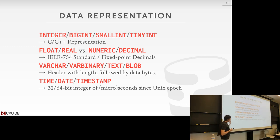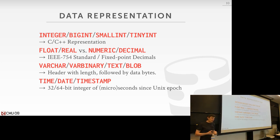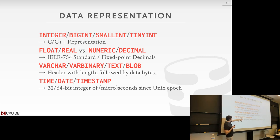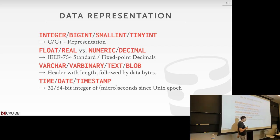For dates and timestamps, this varies wildly across database systems. Most systems usually just store the number of seconds, microseconds, or milliseconds since the Unix epoch — January 1st, 1970. You can say you want the date without the time or the time without the date. Underneath, it still stores the full timestamp; it's just the API that strips out whatever part you don't need. Some systems pack in just the date as a smaller value, but many don't. For fixed-point values, we rely on whatever C++ gives us from the underlying hardware.